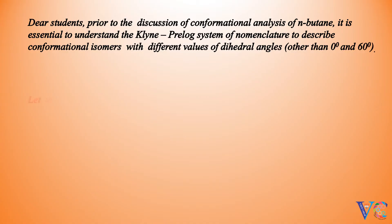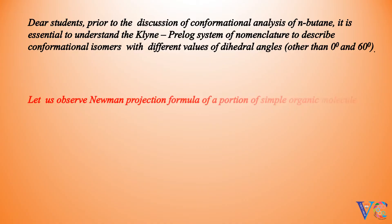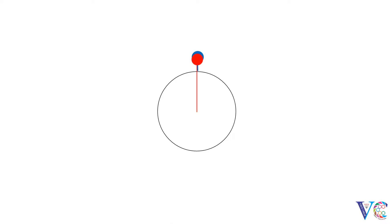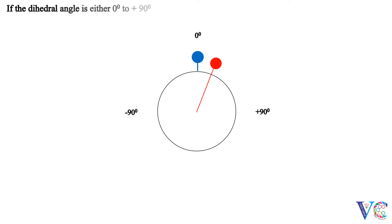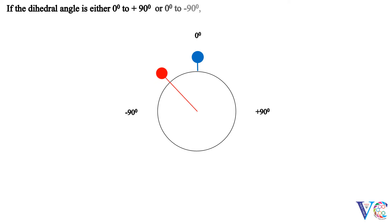Let us observe the Newman projection formula of a portion of a simple organic molecule. If the dihedral angle is either 0 degrees to plus 90 degrees, or 0 degrees to minus 90 degrees, then all those conformers are syn conformers.